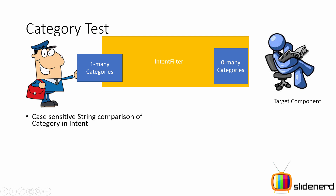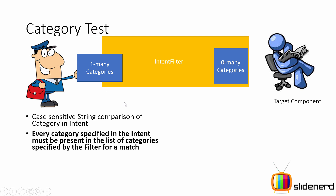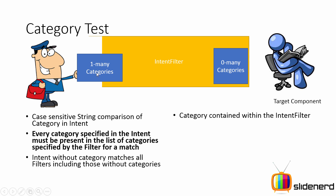Let's take a look at how they match up. There's your intent on the left and the intent filter on the right. The first step is a case-sensitive string comparison of the category defined inside the intent filter and the one defined within the intent — are they the same? If yes, there's a match. Since an intent can specify zero or many categories, every category defined by the intent must be contained within the list of all categories that your intent filter defines. For example, if your intent has categories A, B, C and your intent filter contains A, B, C, D, E, F — that's a match.